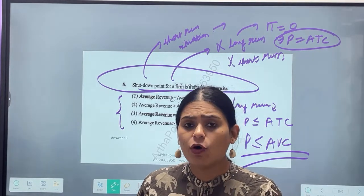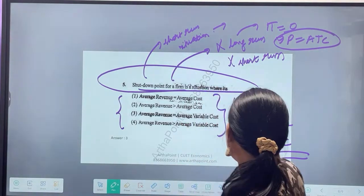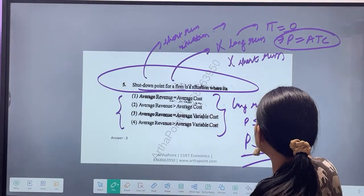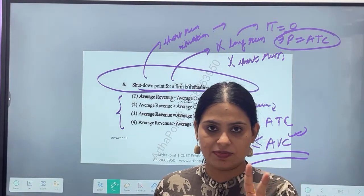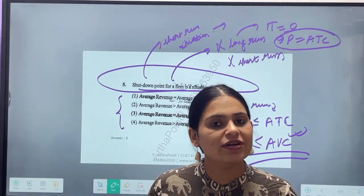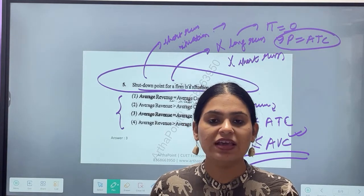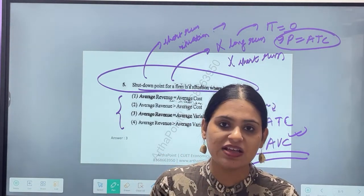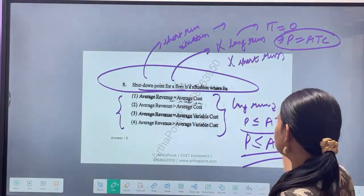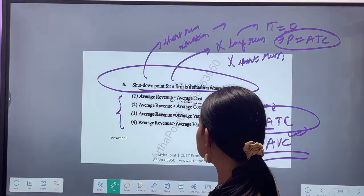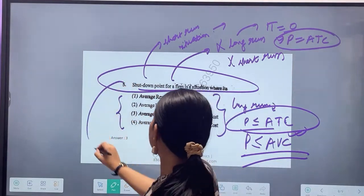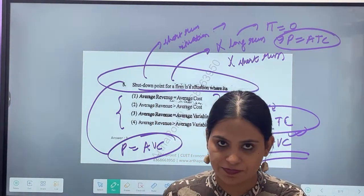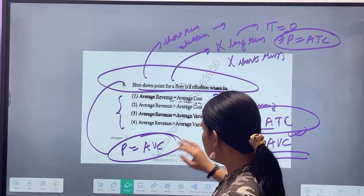So by default, my shutdown point should be given by this. This is my first claim. Second reason why I will go with this answer: In long run, is there any fixed cost? No. If there is no fixed cost, then all costs are variable. So if there is only variable cost, then I just want to cover all my variable cost. So the correct answer to this question should be that the shutdown point is where P is equal to AVC.